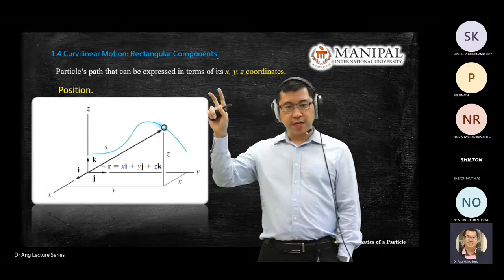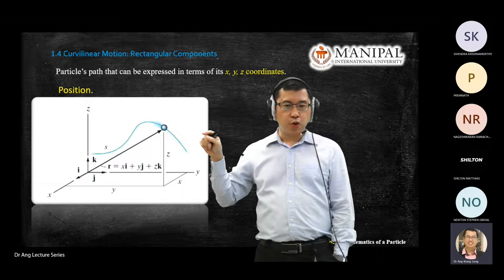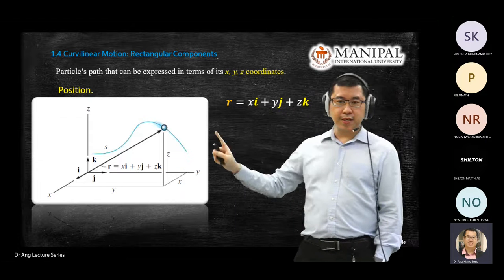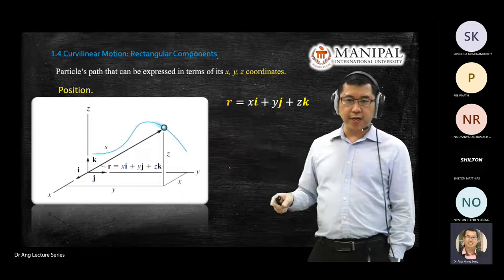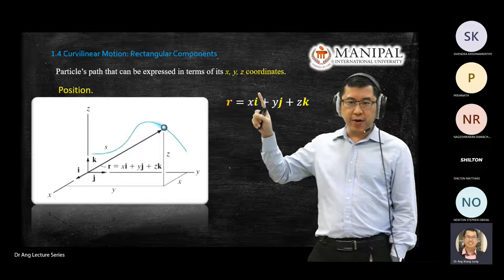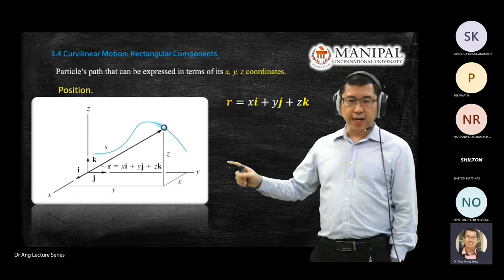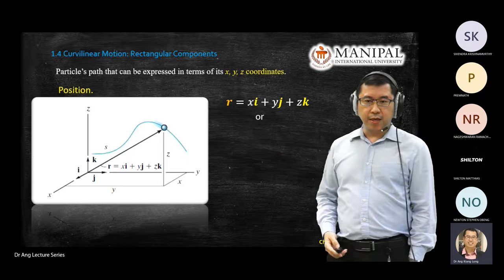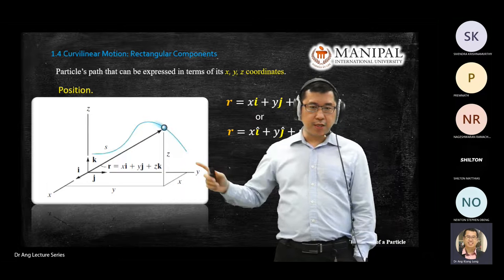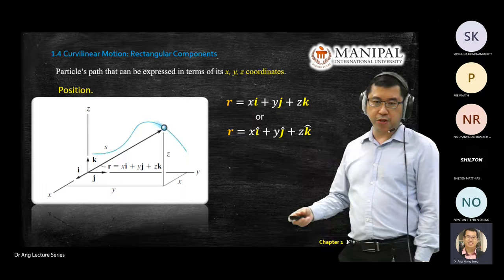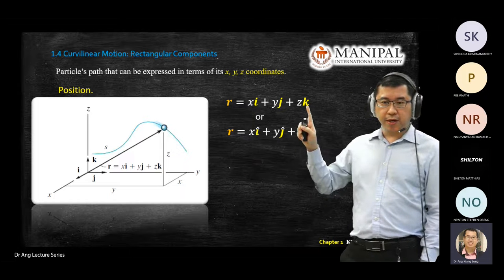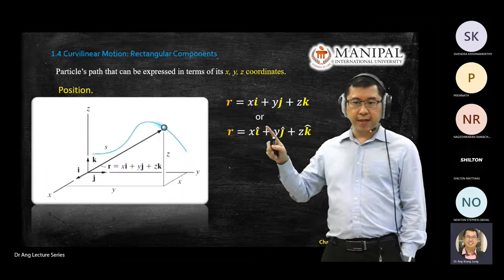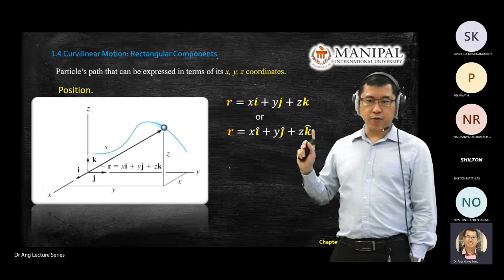When you see an equation like r equals xi plus yj plus zk, to avoid confusion in exams I will use an arrowhead above i, j, k to represent vector direction. So xi plus yj plus zk represents the position. To find the magnitude of this vector, you take the square root of x squared plus y squared plus z squared. The i, j, k tell you the direction of the vector.